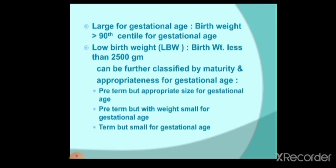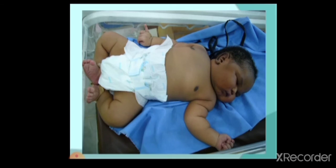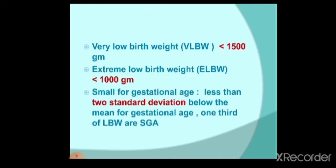Low birth weight babies are those whose weight is less than 2.5 kilos. This is a photo of a macrosomic baby whose weight is more than 4 kilos. Very low birth weight refers to any newborn whose weight is less than 1.5 to 1 kilo. Extreme low birth weight refers to any newborn whose weight is less than 1 kilo.